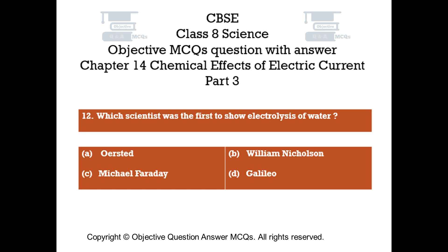Question number 12. Which scientist was the first to show electrolysis of water? Option A: Oersted. Option B: William Nicholson. Option C: Michael Faraday. Option D: Galileo.